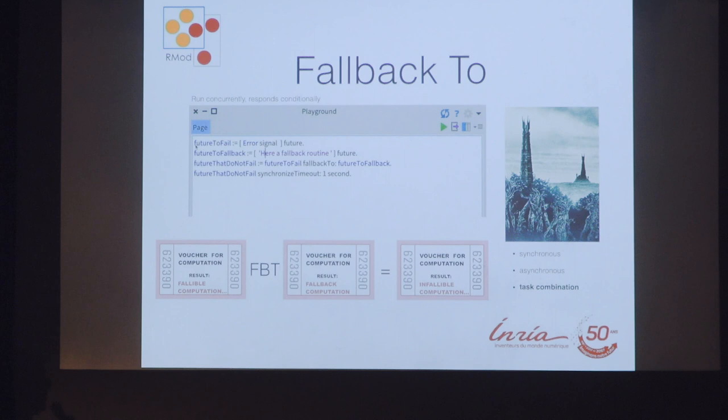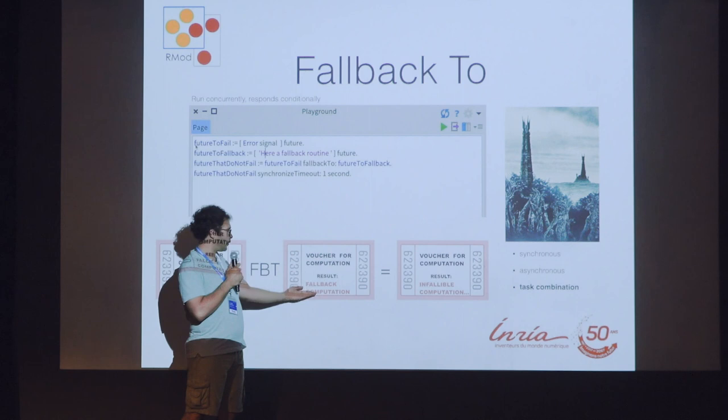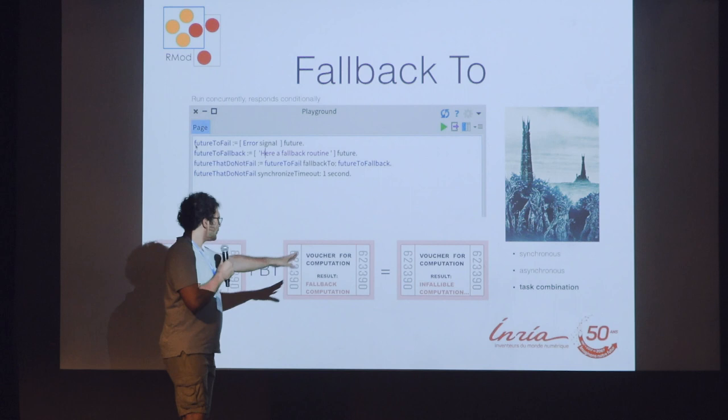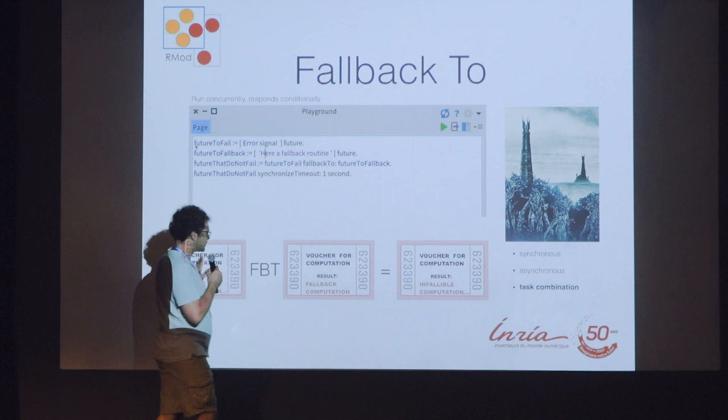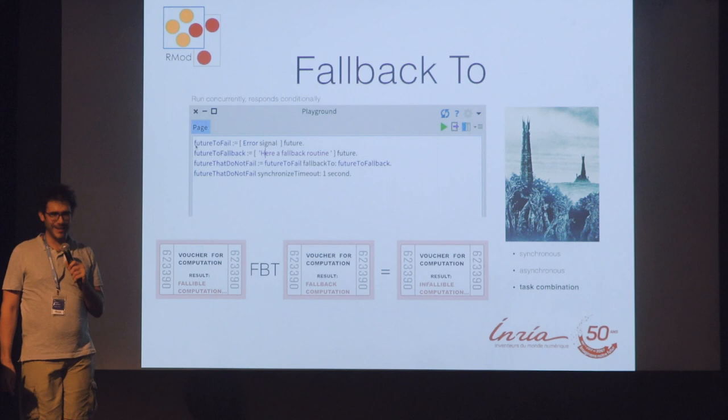Then we have fallback. What it does is: if there is an error in the first future, we have a fallible computation. We combine it with a fallback computation, and therefore we have an infallible computation. The idea is this future is supposed to give you a result without any error — in case the first fails, it gives you this fallback result instead. It's supposed that the programmer knows it will not fail, so calling it an infallible computation is quite arrogant.